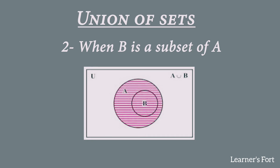The second case is when B is a subset of A. Here, A is the bigger set and B is its subset, meaning all elements of B are also elements of A. We represent B as a smaller circle inside set A, and we shade both sets A and B together to show the operation A union B.